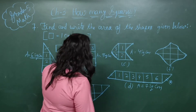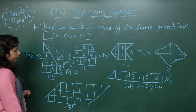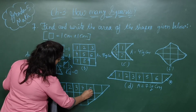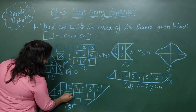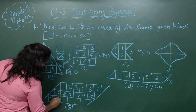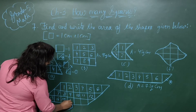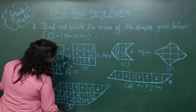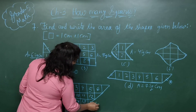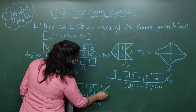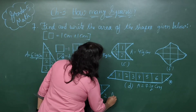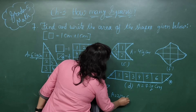In picture number E, count the completed squares first: 1, 2, 3, 4, 5, 6, 7, 8, 9, 10, 11, 12, 13, 14, 15, 16, 17, 18. Then half and half make 19, half and half make 20, half and half make 21. The area of this shape is 21 square centimeters.